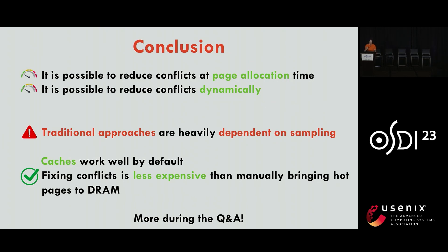In conclusion, I have shown that it is possible to reduce the number of conflicts at page allocation time or dynamically. Traditional approaches to managing the cache are heavily dependent on their ability to detect hot and cold data sets, whereas caches tend to work well by default. In all cases, fixing conflicts in a cache is less expensive than manually bringing hot pages to RAM. Thank you for your attention, and I'll be ready to answer questions in the Q&A session.